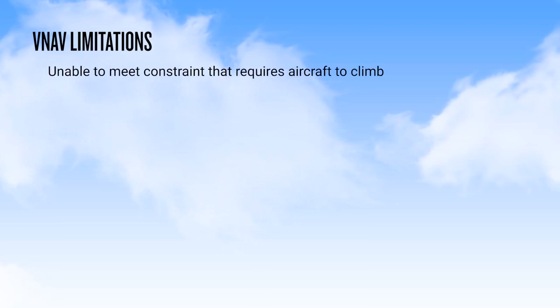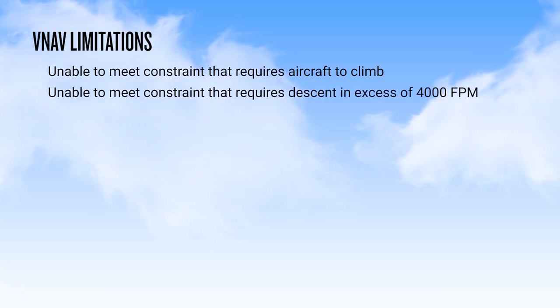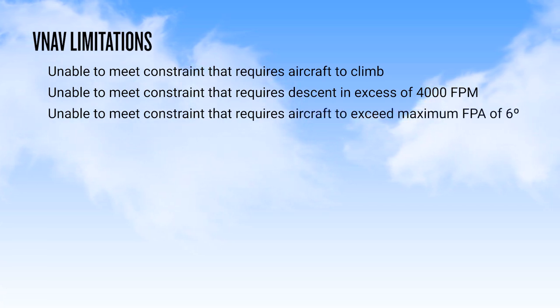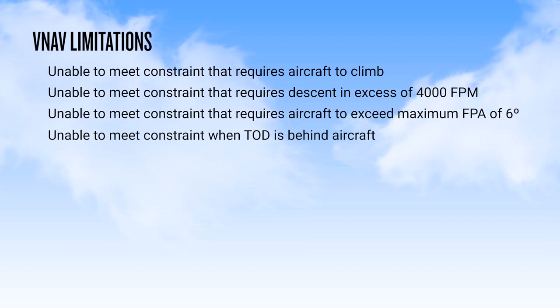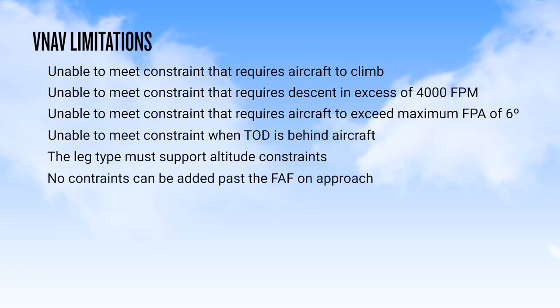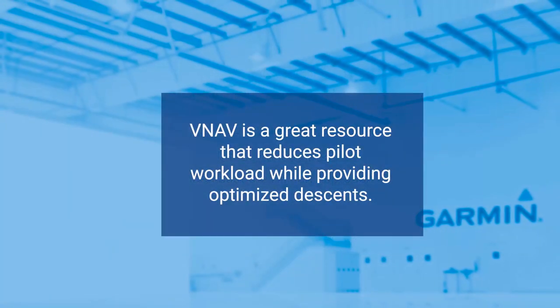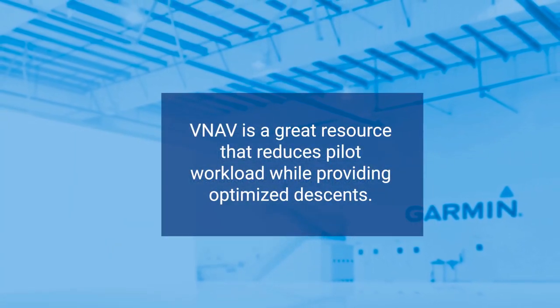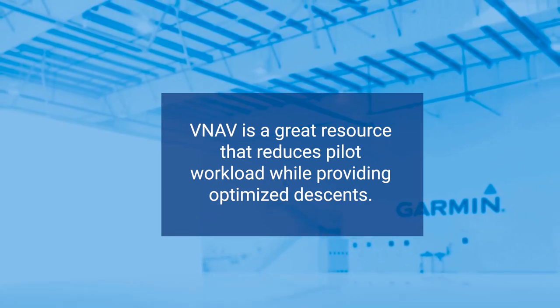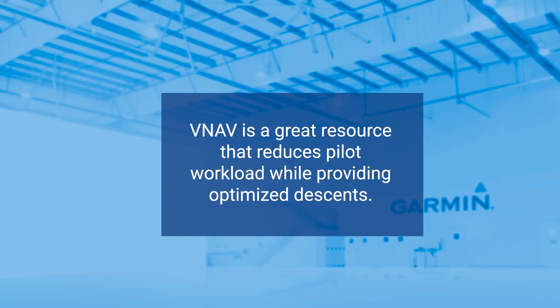Vertical navigation in the GTN has certain limitations. The system cannot meet constraints that require the aircraft to climb, cannot meet constraints requiring a descent in excess of 4,000 feet per minute, or a flight path angle in excess of 6 degrees. It also cannot meet a constraint when the top of descent is located behind the aircraft, the leg type must support altitude constraints, and no constraints can be added past the final approach fix. If the system is unable to reach a current vertical waypoint, you will receive a message informing you of the issue. Whether using VNAV with an autopilot on a descend via clearance or hand-flying to arrive at pattern altitude, the VNAV feature reduces pilot workload while providing optimized descent profiles.